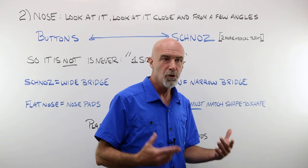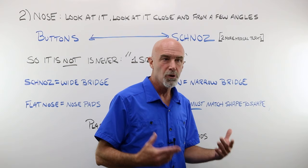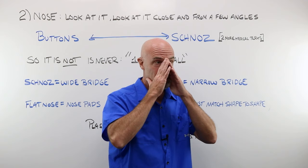What you're looking for is always the maximum contact. It should look as if that frame were made specifically for that person. That's kind of as close that perfect match that you're looking for. What a bad plastic frame fit looks like. See how the frame is resting on just two points? This will quickly become uncomfortable for her to wear. Image is a little bit hard to see, but basically what you have going on there is this. You've got a frame with a sharp corner, and instead of resting on the bridge, instead of spreading that weight and the frame over the entire curvature of her nose. It is literally digging in at a corner, digging in at a corner, and it would probably be comfortable for about 30 seconds. Here is what a great plastic frame fit should look like. See how the frame shape matches her nose perfectly.